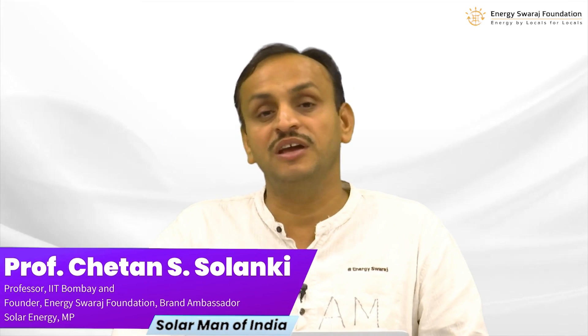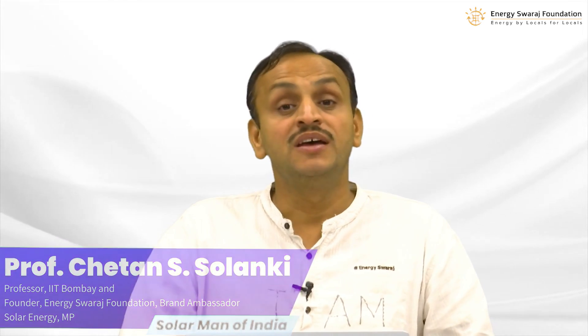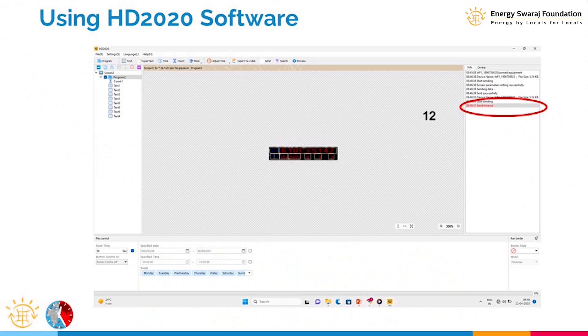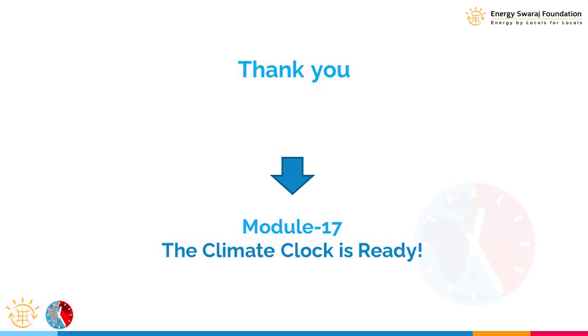I am going to demonstrate what happens once you send this data to the clock. If there is any issue during the process of sending data and something gets interrupted, observe the info bar on the right side of the screen, follow the red alerts, resolve them, and you are good to go. I will now show you how the data on the climate clock will look.